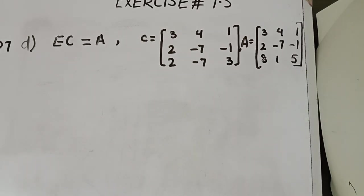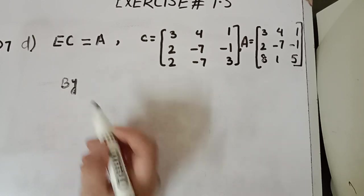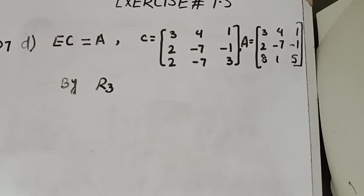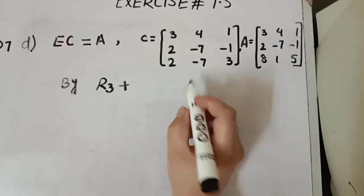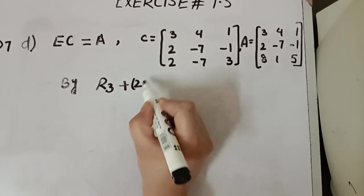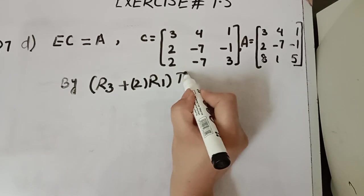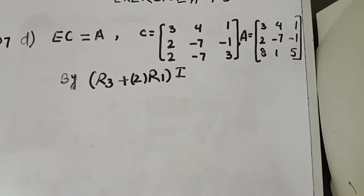How will the third row of C matrix change to give A? We will do: R3 plus 2 times R1. We will apply this row operation to I because we have to find the elementary matrix.